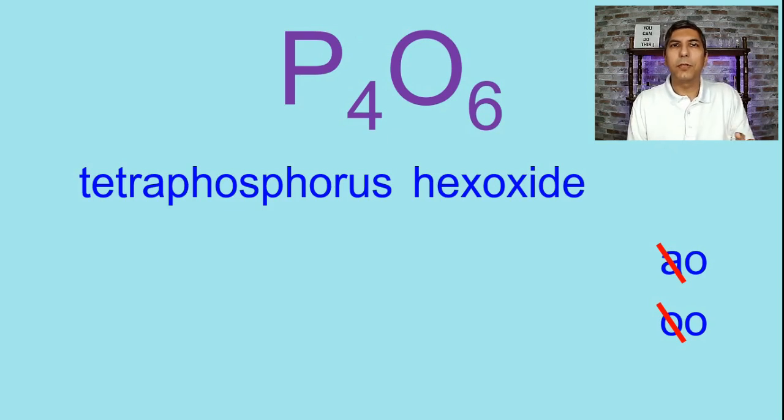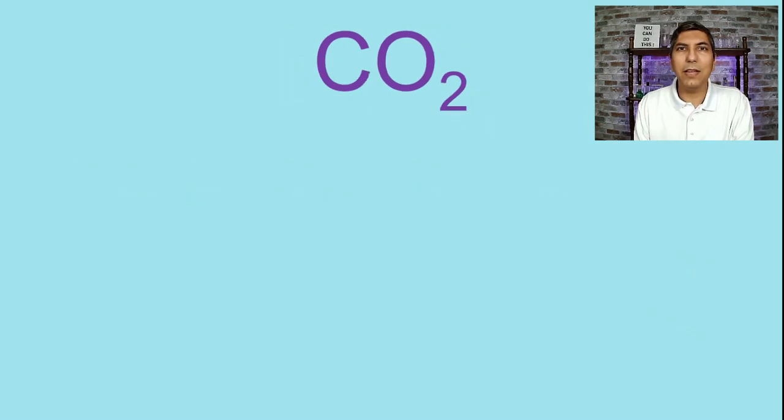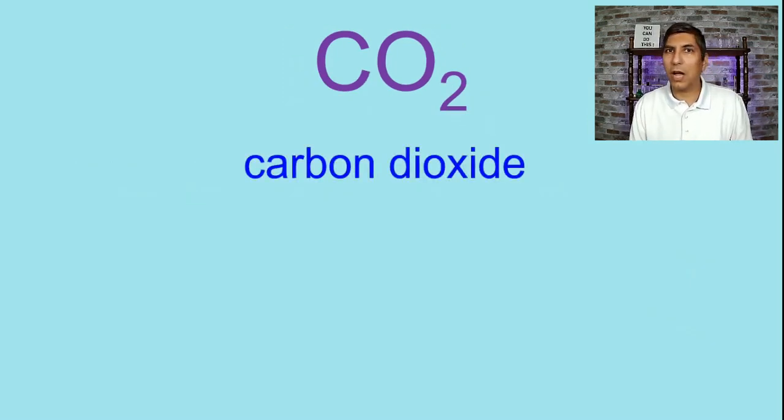Now let's try this next compound. In fact, I imagine you probably already know the name of this compound, CO2. Now you know that that's carbon dioxide, don't you? You've probably seen that in other science classes or just from living your everyday life, and that is the name for this compound. But I have a question for you. Why is it called carbon dioxide and not monocarbon dioxide? Because we can look at the formula and see that there's only one carbon here. Why don't we call it monocarbon dioxide?